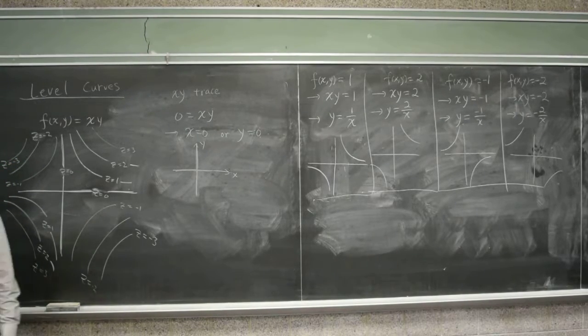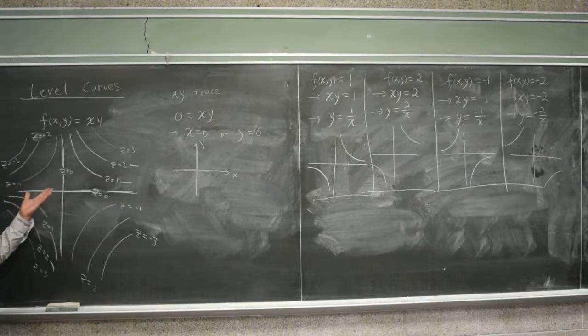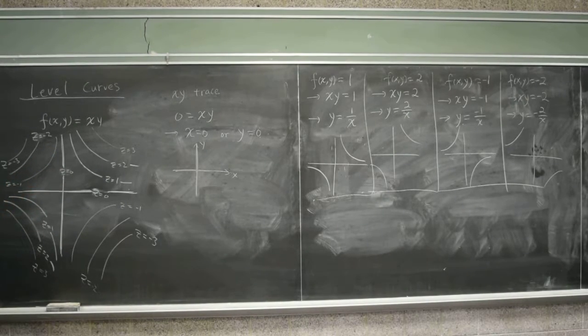And when you have this graph, what you want to think about is the terrain map. Everyone here knows how to read the terrain map, right? Terrain maps are basically these level curves, right? You have, what did you say? What did you say? It's a topographic map. It's a topographic map. Yeah, yeah, yeah. Exactly. It's a topographic map.